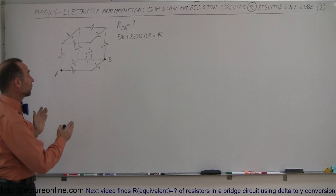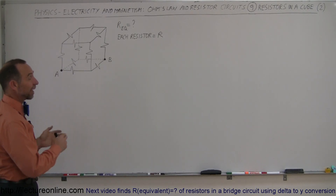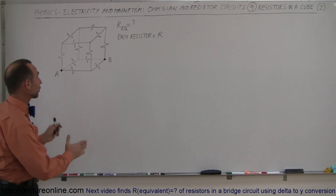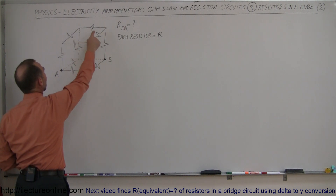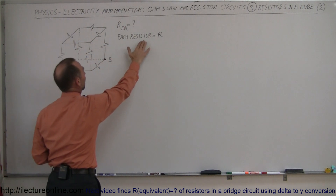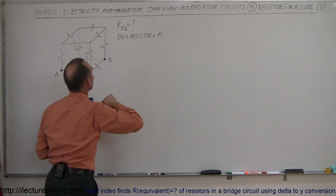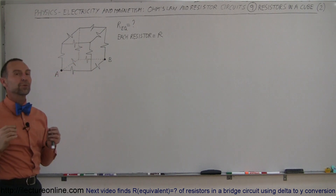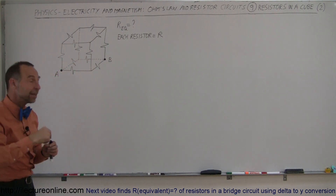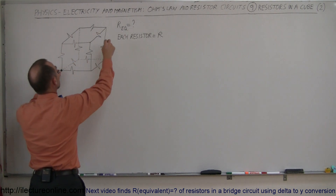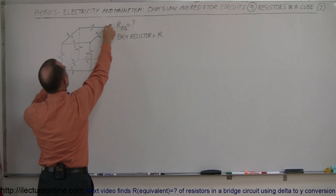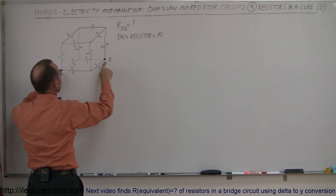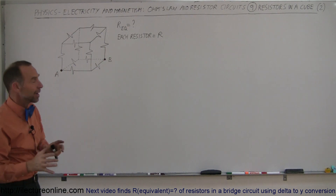In the last video, we did something that looked exactly the same on the surface, where we had a cube with a resistor on each side, all having the same value R, and you were supposed to find the equivalent resistance. But in the last video, the points of interest were at opposite corners. In this case, we want to find the resistance between two different points, so it's actually a very different problem.